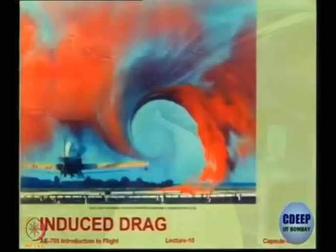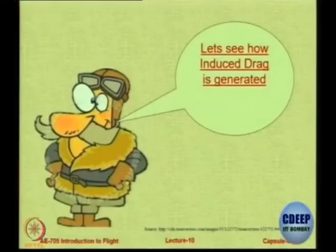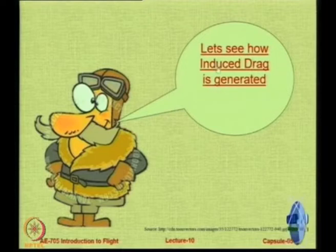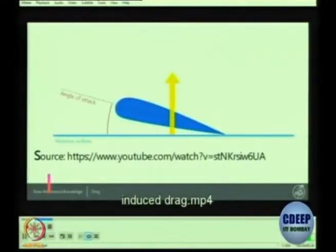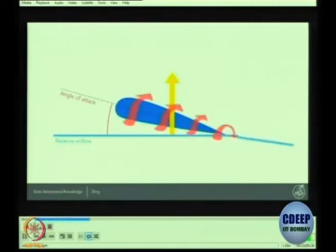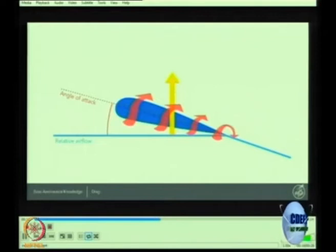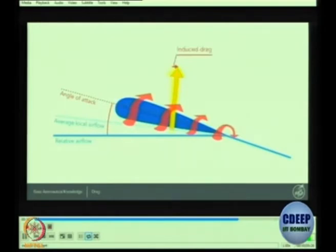Essentially, induced drag can be explained in many ways. One way: because of the presence of the tip, away from the root, you get upwash before the aircraft and downwash behind it — the air has been made to tilt. So the lift vector will be canted backwards, producing a backward component that is the induced drag. Another explanation: at high angles of attack, high-pressure air below the wing swirls around the wing tip towards the low-pressure air above, forming a twisting vortex that deflects the airflow downwards. An inclined local airflow is created — the average of the relative airflow and the deflected airflow — resulting in the lift vector tilted backwards and contributing to total drag.